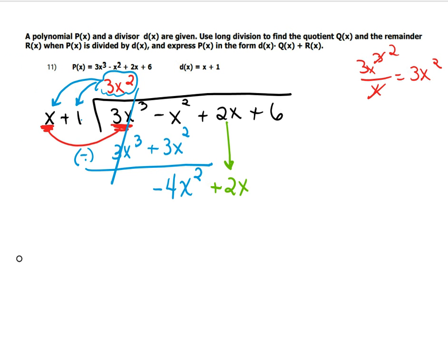And then you're going to drop down the next term, which is plus 2x. And you're going to divide again. Okay, so we're now going to take this x again and divide it into the negative 4x². Negative 4x² divided by x. This x cancels out one of those but leaves you with an x to the first. So this is negative 4x and that's what's going to go right here.